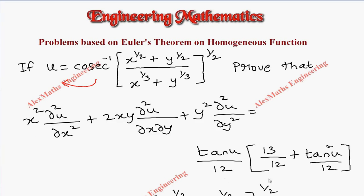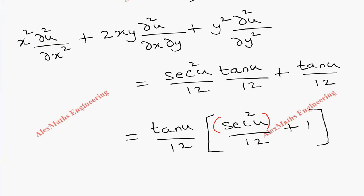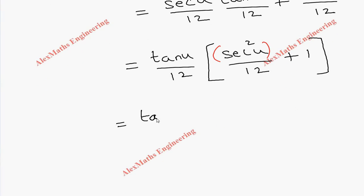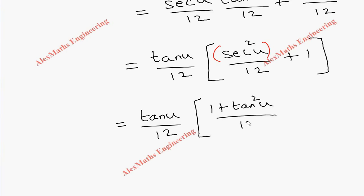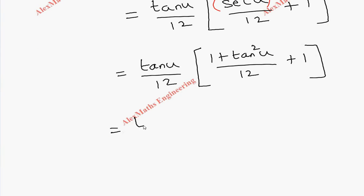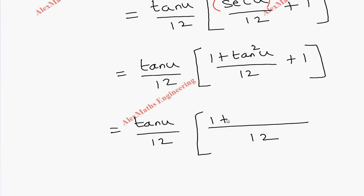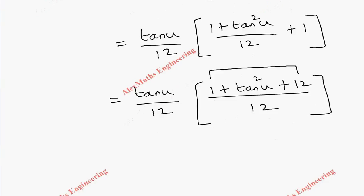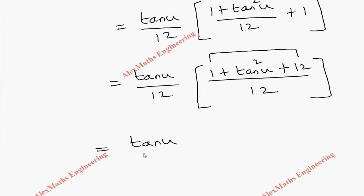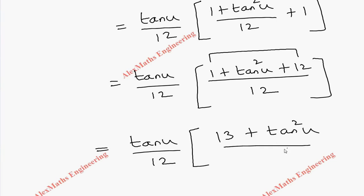Since the proof requires all terms in tan only, let's convert sec²u using the trigonometric identity sec²u = 1 + tan²u. So we have: (tan u / 12) · (1 + tan²u) / 12 + 1. Taking LCM as 12 gives (tan u / 12) · (1 + tan²u + 12) / 12 = (tan u / 12) · (13 + tan²u) / 12.